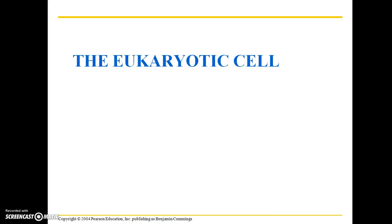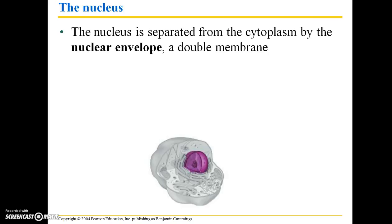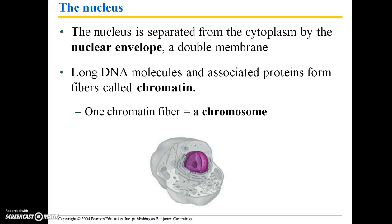The next few slides, dealing with organelles, are all specific to the eukaryotic cell. The nucleus is separated from the cytoplasm by the nuclear envelope, which is a double membrane similar to the phospholipid bilayer. There are long DNA molecules and associated proteins that form fibers called chromatin, and one chromatin fiber is a chromosome.